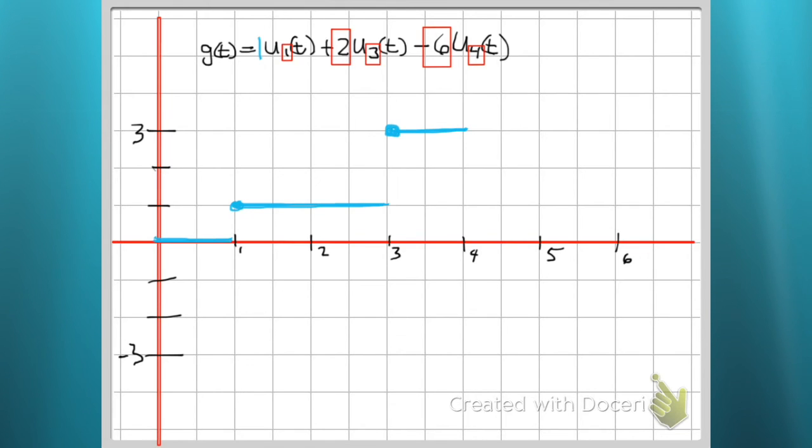So we're going to subtract 6 from 3. And we do. And that's how we got down there to minus 3. And we do that in perpetuity. Who gets the end point? Left side gets the end point. So that was graphing our unit step function.